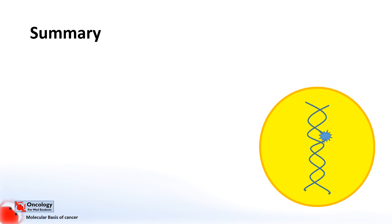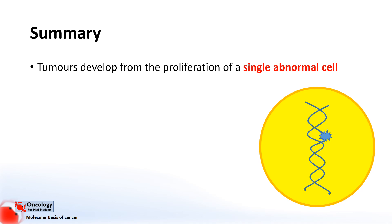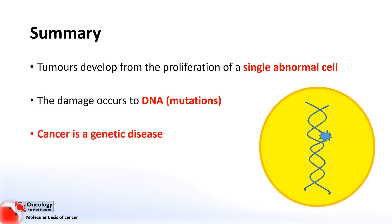To summarise: in this brief introduction we've learnt that tumours develop from the proliferation of a single abnormal cell, and this damage occurs to the DNA — more specifically to the genes — which go on to produce faulty proteins that change the way the cell behaves. This is why people consider cancer to be a genetic disease, because the damage occurs at the level of the gene. It doesn't mean that all cancers are inherited; the damage can occur in lots of different ways including exposure to certain things in the environment, but where we see the damage is at the level of the gene.